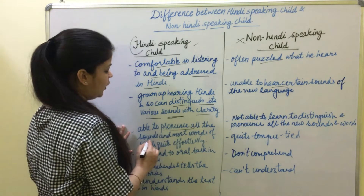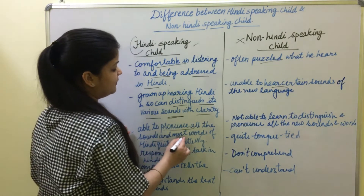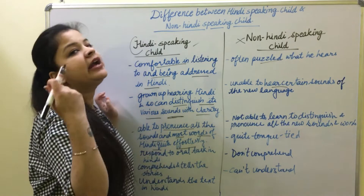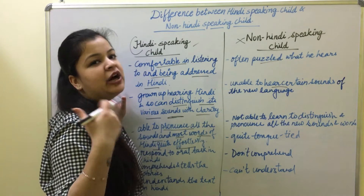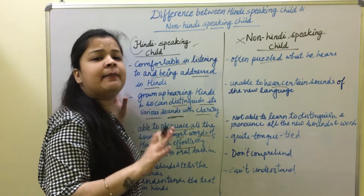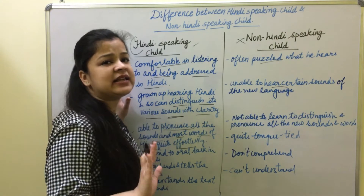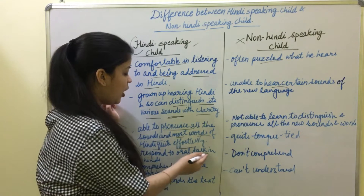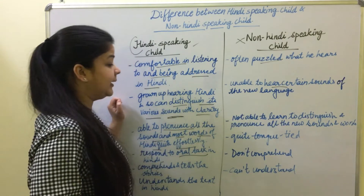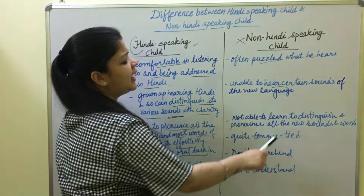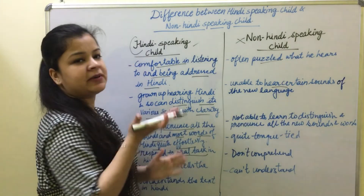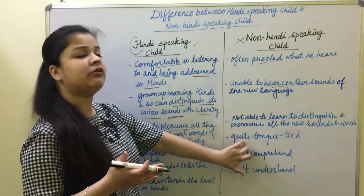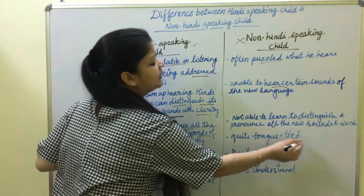A Hindi-speaking child is able to pronounce all the sounds and most words of Hindi quite effortlessly. It means that if given time, they can learn Hindi very quickly and perform other tasks in Hindi as well. But a non-Hindi-speaking child can learn and distinguish between sounds, though when asked questions about Hindi, they will be tongue-tied.